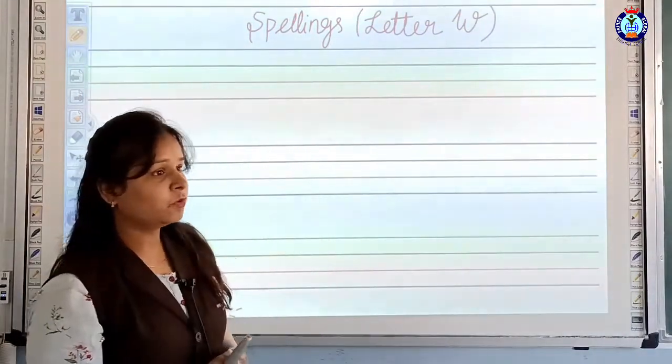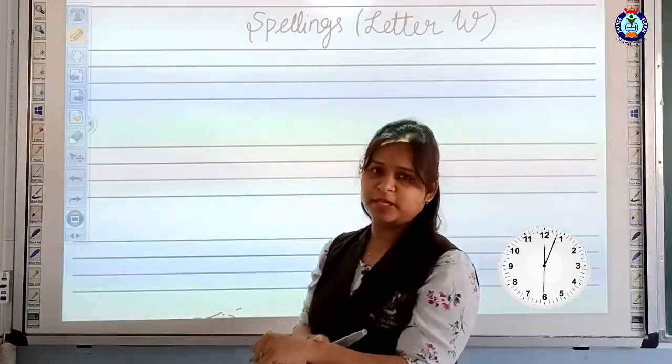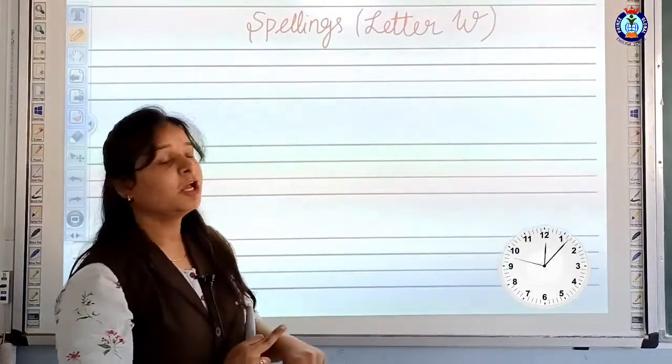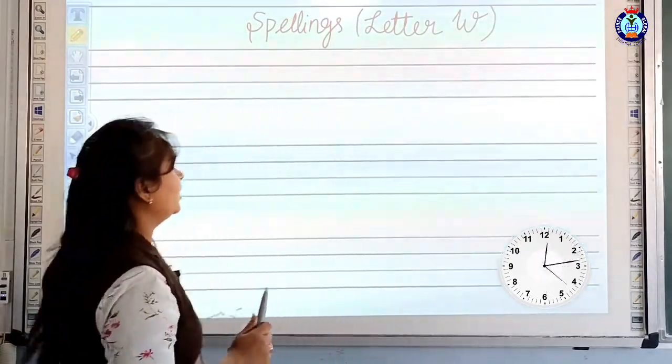Watch means wristwatch, the watch you wear on your wrist. And wool means thread. Let's start.